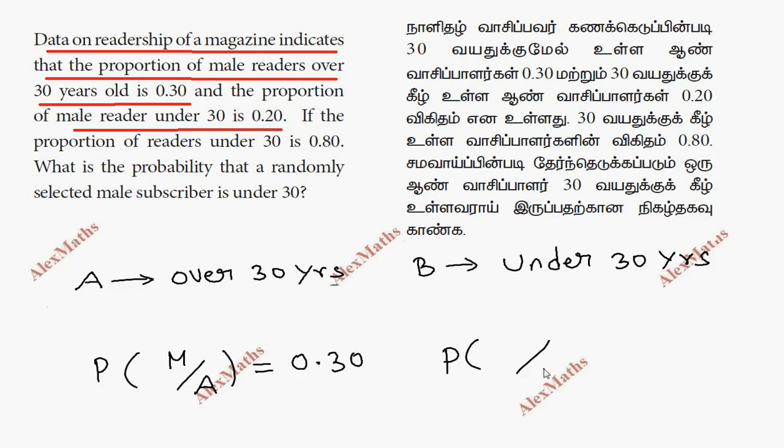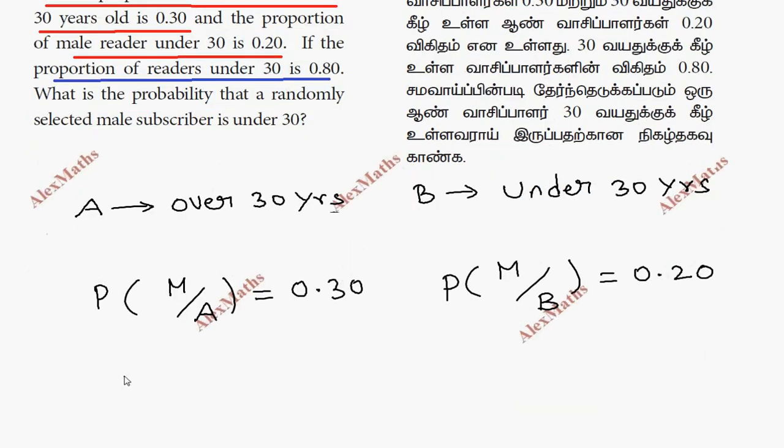For under 30, P of M given B is 0.20. The proportion of readers under 30 is given, so P of B is 0.80.